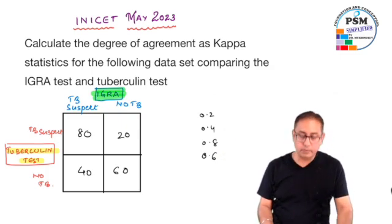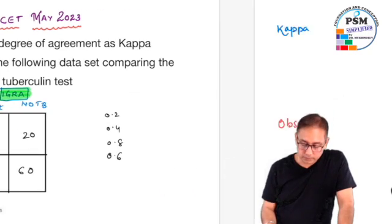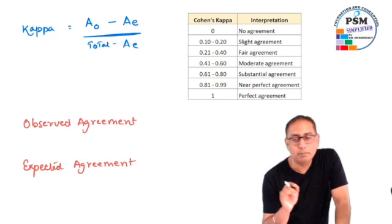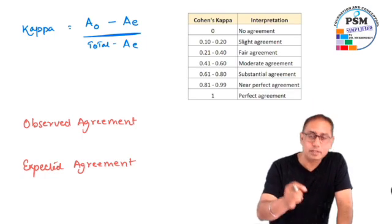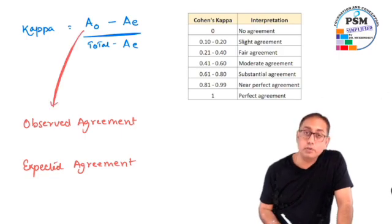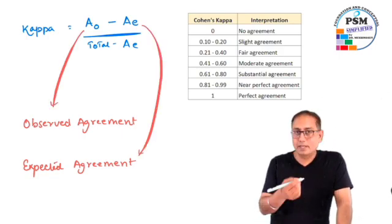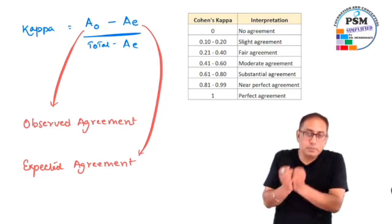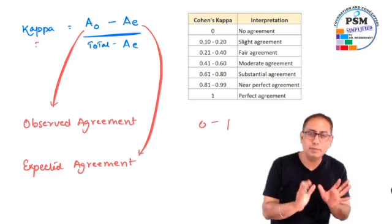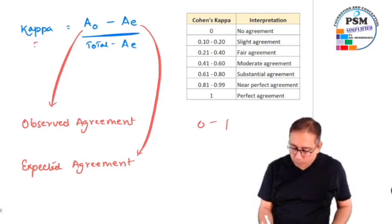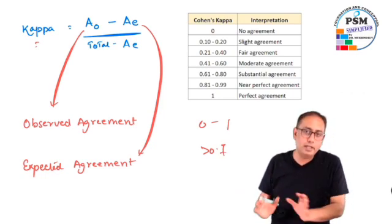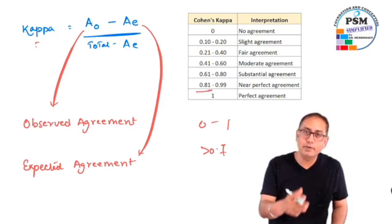The options given were 0.2, 0.8, 0.6, and so on. How to calculate kappa statistics? You already know the formula. It is: observed agreement minus expected agreement divided by total minus expected agreement. A_o is observed agreement, A_e stands for expected agreement. The kappa stats ranges from 0 to 1. Zero means no agreement, 1 means perfect agreement. Generally speaking, more than 0.7 is very good agreement, more than 0.8 is near perfect, and 1 is perfect agreement.